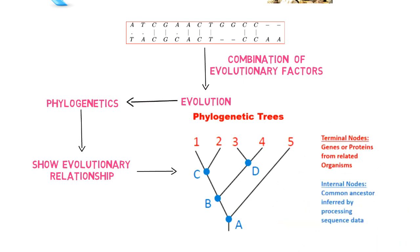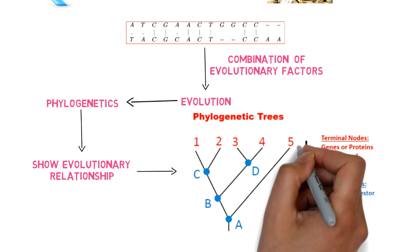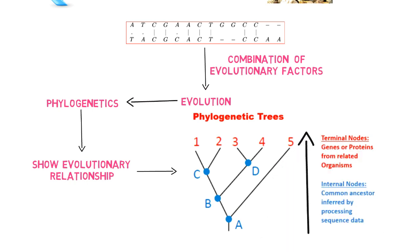The root node is the ancestor of all other nodes. The direction of evolution is from the ancestor to the terminal nodes. Rooted and unrooted trees can be used to show phylogenetic relationships between sequences.